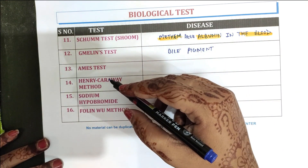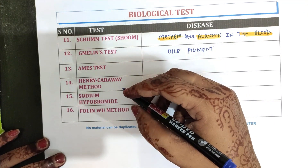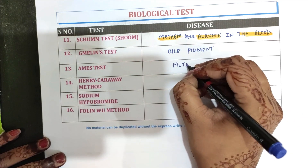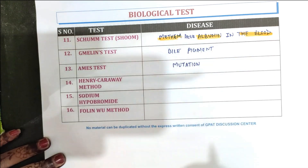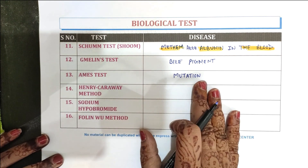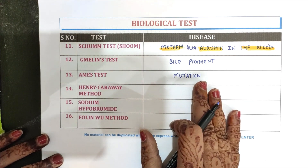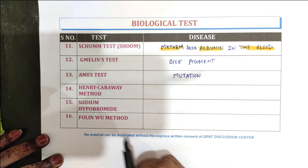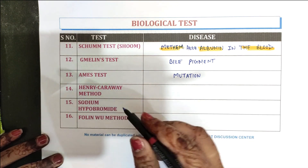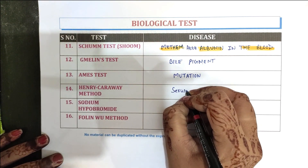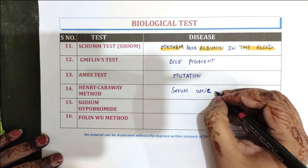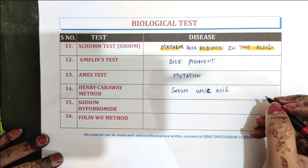The next one is the Amps test, which is done for the detection and estimation, or for checking mutation. The next one is the Henry Carave method. With the help of the Henry Carave method, the serum uric acid level is determined.